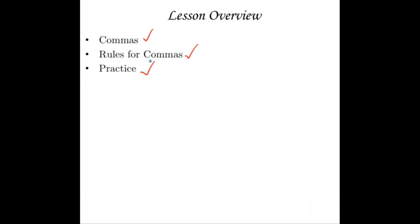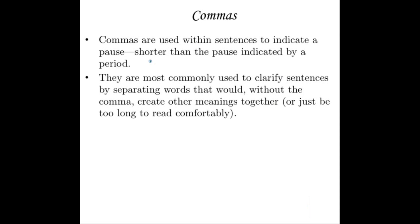To begin with, what is a comma, and what do they do? Commas are used within sentences to indicate a pause shorter than the pause indicated by a period. Ideally, a period indicates that you stop and take a new breath if you were reading these sentences aloud. A comma just indicates that you stop for a moment, but you don't take a new breath — you just kind of pause and on you go. They are most commonly used to clarify sentences by separating words that would, without the comma, create other meanings or just be too long to be read comfortably.